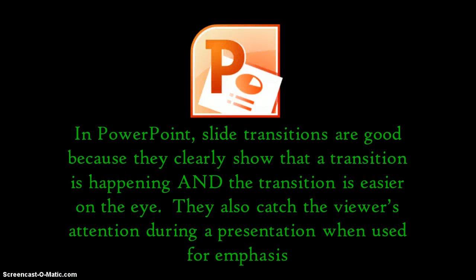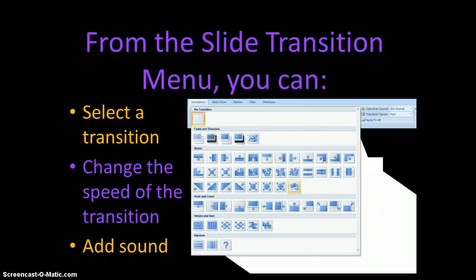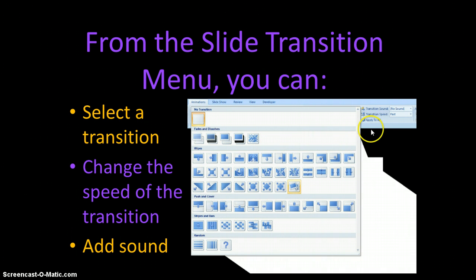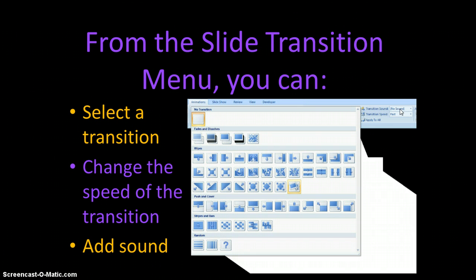In PowerPoint, slide transitions are good because they clearly show that a transition is happening from one slide to the next, and the transition is easier on the eye. They also catch the viewer's attention during a presentation when used for emphasis. From the slide transition menu, you can select a transition, change the speed, and add sound. So three things: choose a transition, change the speed of the transition, and add some sound to it.